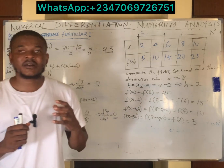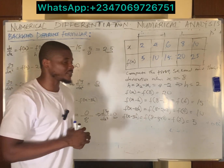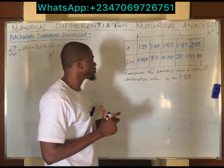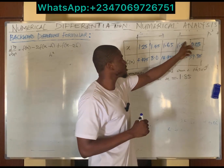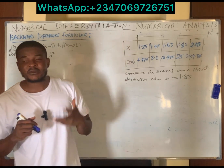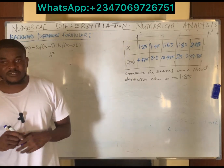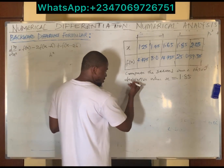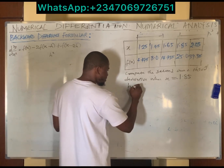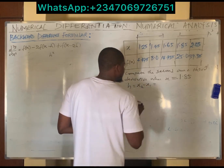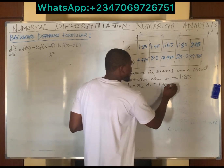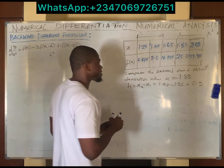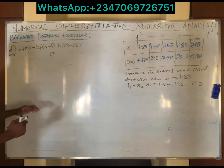Now for the second and final question: compute the second and third derivative when x equals 1.85. Since 1.85 lies at the back of the table, we'll use the Newton backward difference formula. For the second derivative, the first step is to find the interval h. Here h equals x2 minus x1, which is 1.45 minus 1.25, giving h equals 0.2.